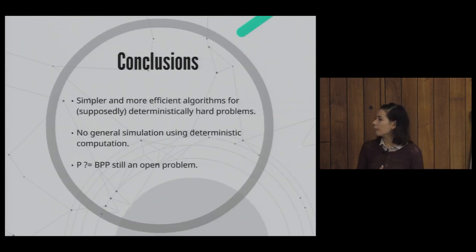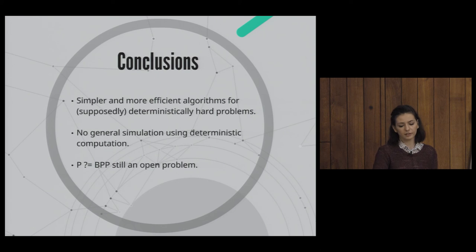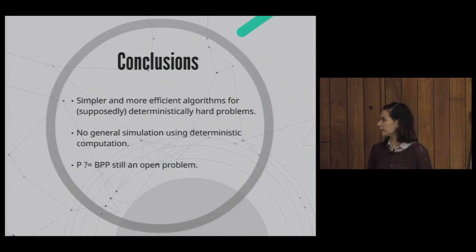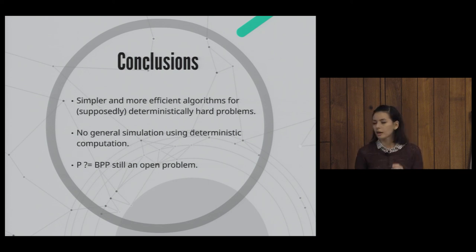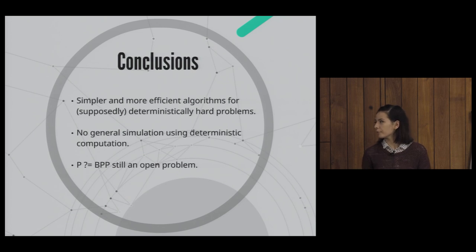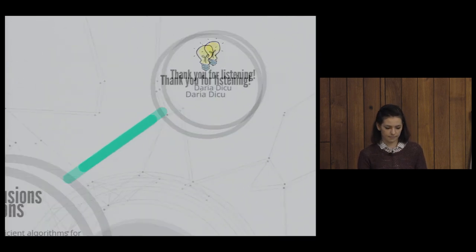In conclusion, randomness gives us simpler and more efficient algorithms than known deterministic solutions for some problems, though we do not know whether more efficient deterministic algorithms might exist. BPP versus P remains an open problem, but many researchers conjecture that P equals BPP, as it is believed that pseudo-random generators with the required properties do in fact exist.